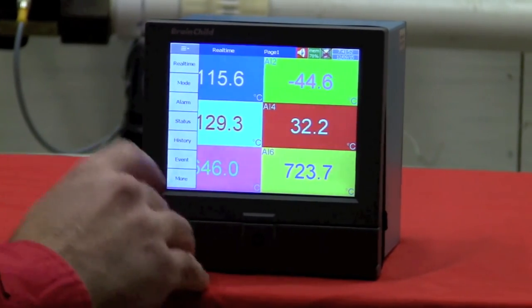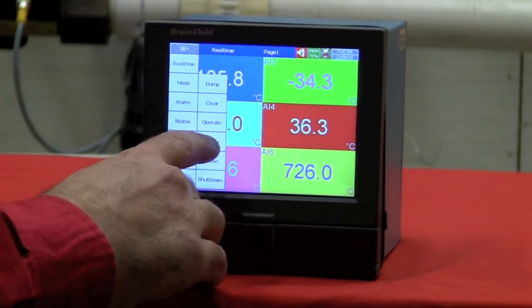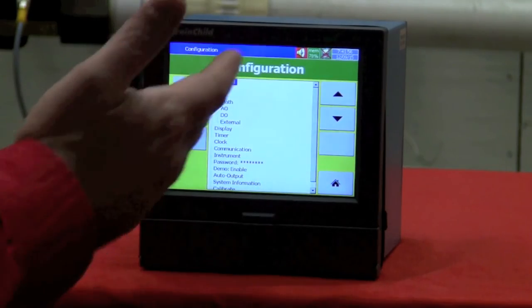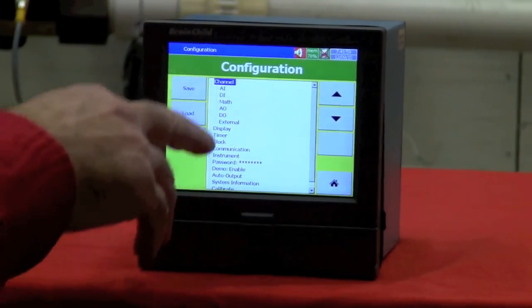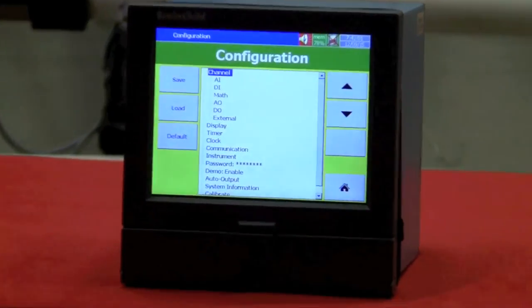To configure a point, just go to the start drive, More, Config, and there you can see where you can configure the channels, analog inputs, digital outputs, and extended math functions.